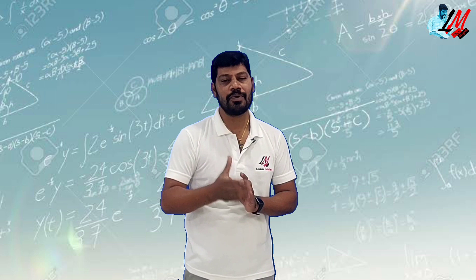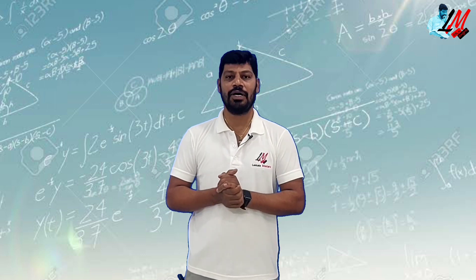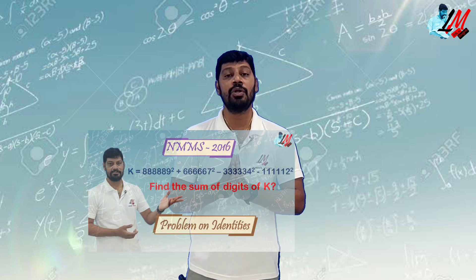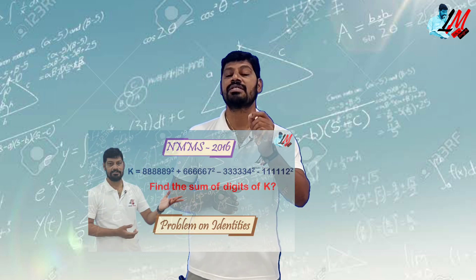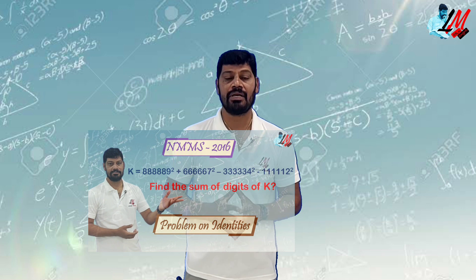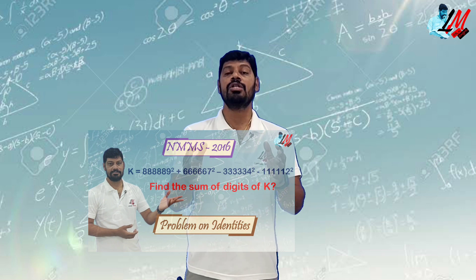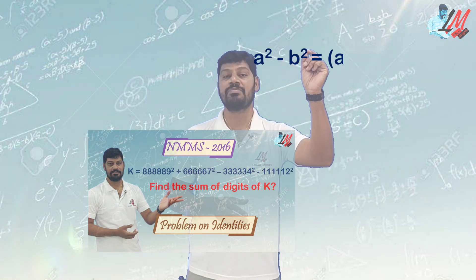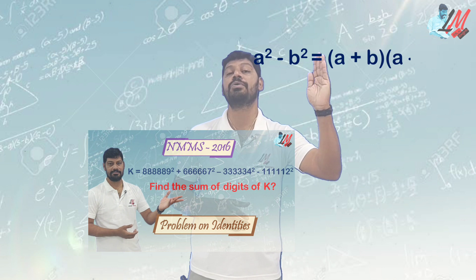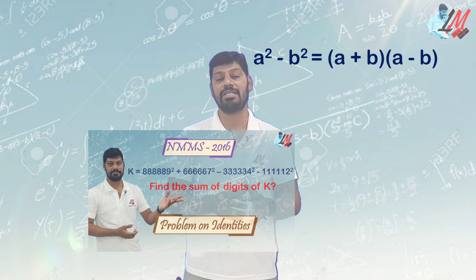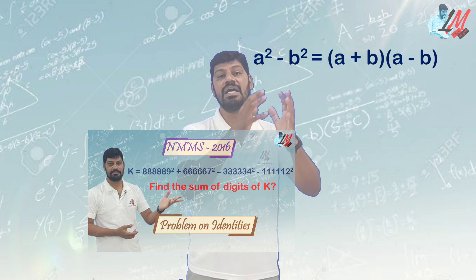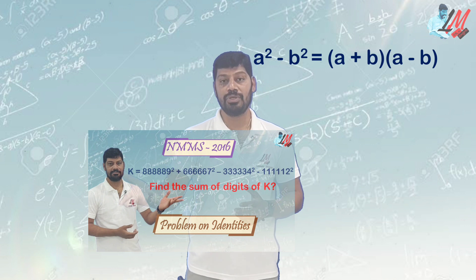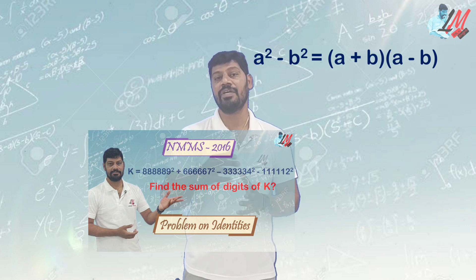Hello everyone, this is Yuvarlay Kalamastaru Haragupal. In this video, I will tell you about the NMMMS 2016 SAT paper. The algebraic identity a squared minus b squared equals a plus b into a minus b — I will tell you about this identity and solve this beautiful problem.